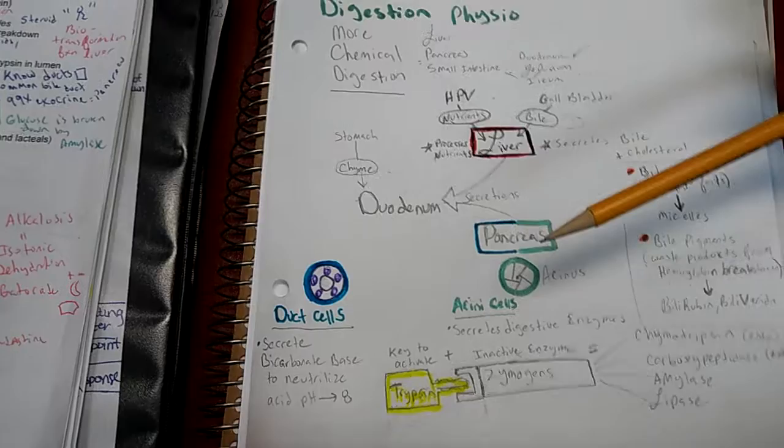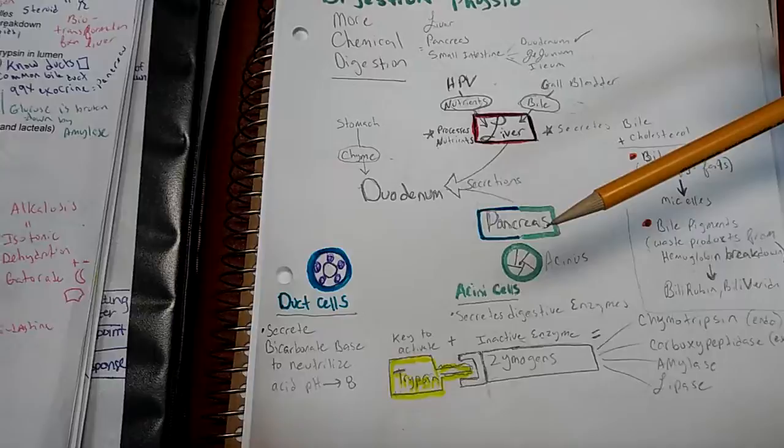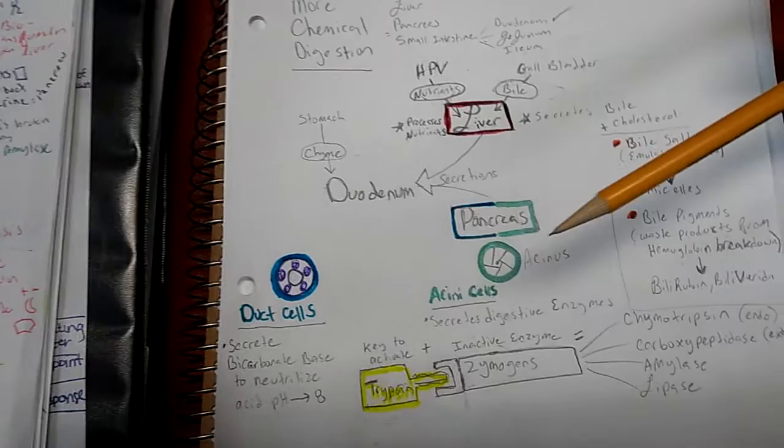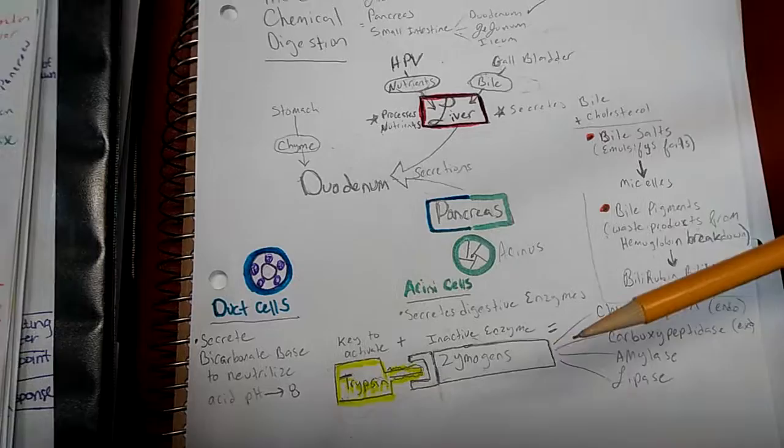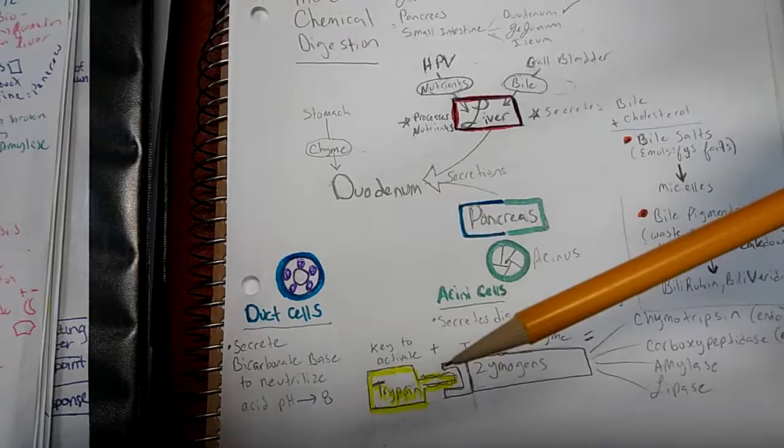The secretions continue to the duodenum from the pancreas. The pancreas has two particular cells: acinar cells and duct cells. The acinar cells secrete digestive enzymes, particularly inactive enzymes called zymogens. The key to activate the zymogens is trypsin.